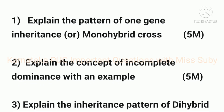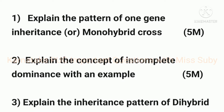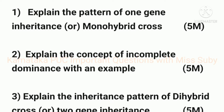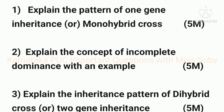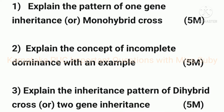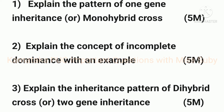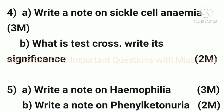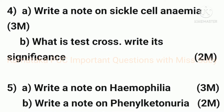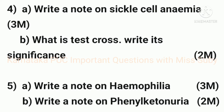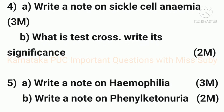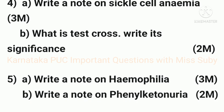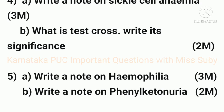The third question is: explain the inheritance pattern of dihybrid cross or two gene inheritance — it also carries five marks. The fourth question is split into two sub-questions: the first is write a note on sickle cell anemia, which carries three marks; the second sub-question is what is test cross, which carries two marks.